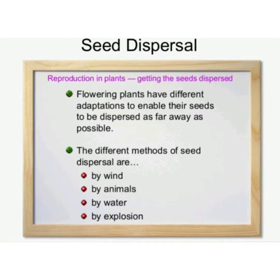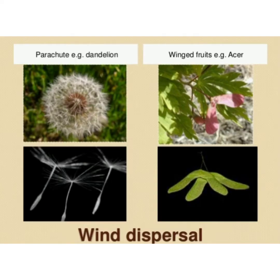The next topic is dispersal of seeds. Plants need to scatter their seeds far away from them to ensure that seeds grow into a new plant. This process is called dispersal of seeds — the process by which seeds are scattered far away from the mother plant.